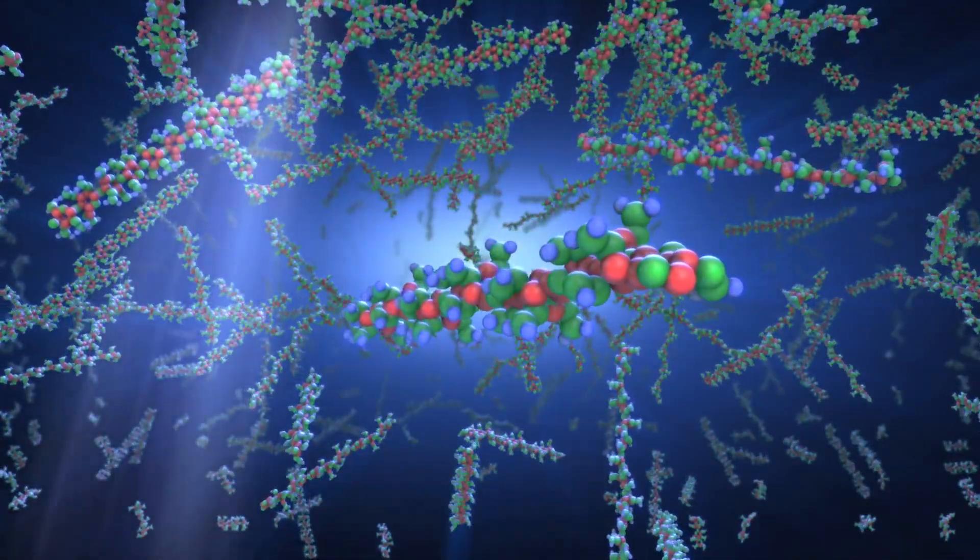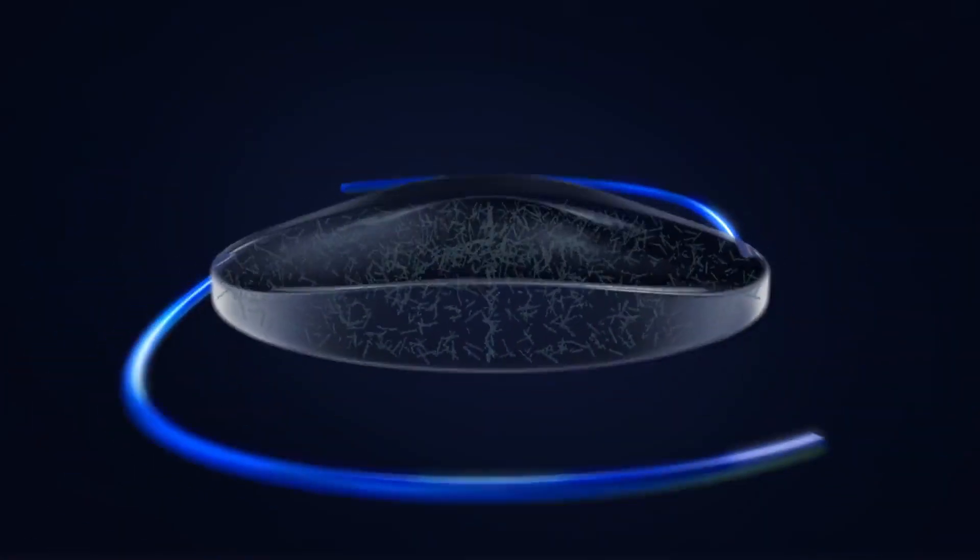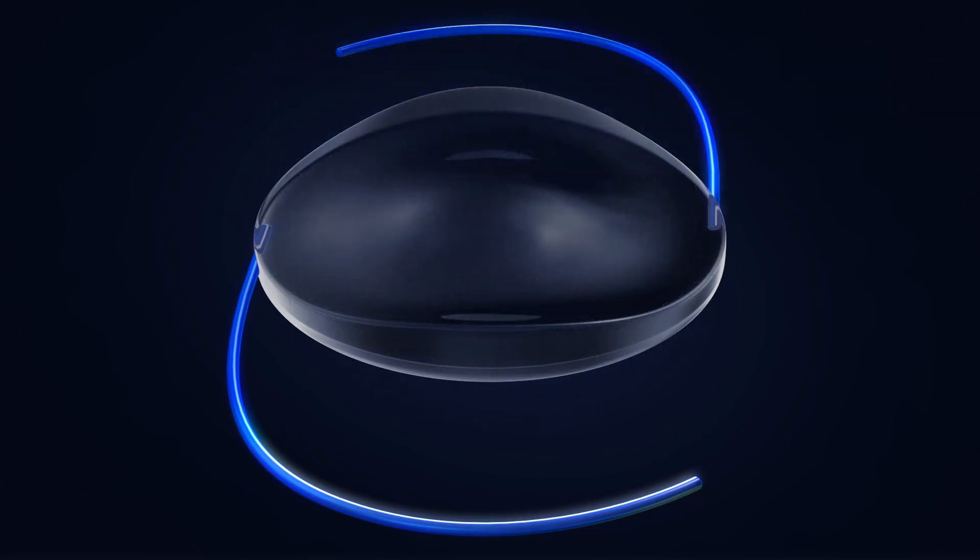When the adjustment process has been completed to the satisfaction of doctor and patient, the entire lens is exposed to the treatment light to polymerize all remaining macromers, effectively locking them in place to prevent any further changes.